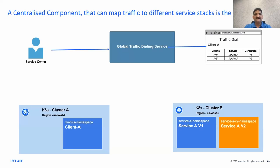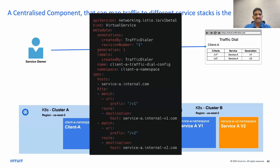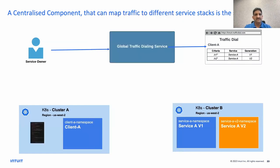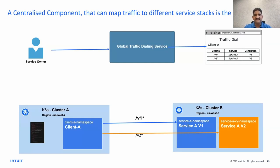Underneath, the global traffic dialing service creates a virtual service. With two service variants V1 and V2, it creates a virtual service to route all V1 APIs to stack V1 and V2 APIs to stack V2, and implants them in the clients configured using the UI. With this mechanism in place, client A can easily dial traffic from V1 to V2. The advantage is that service owners need not know about the evaluation complexities that virtual services offer — they see a simple UI where they mention a criteria and dial the appropriate service stack.